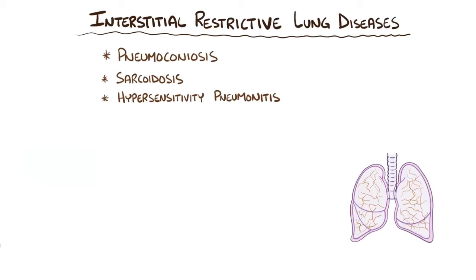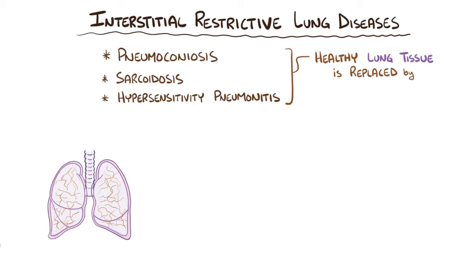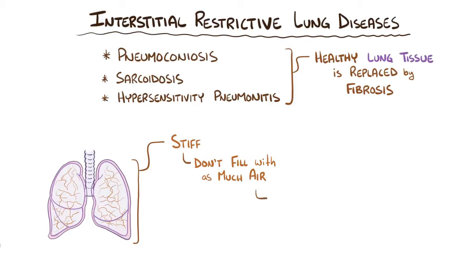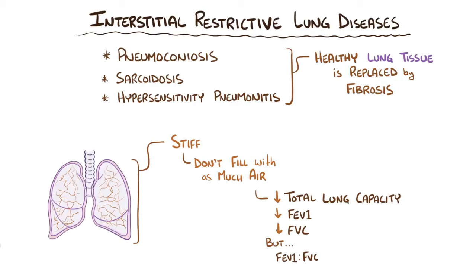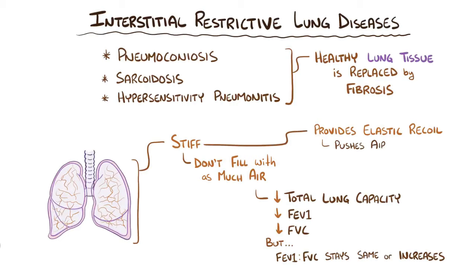With all types of interstitial restrictive lung disease, healthy lung tissue starts getting replaced by collagen fibers, a process called fibrosis. Fibrotic lungs are stiff and firm and can't stretch and expand properly, making it hard for them to fill with as much air. That causes the total lung capacity, forced expiratory volume in one second, and forced vital capacity to all decrease. Interestingly, the FEV1 to FVC ratio actually stays about the same or increases, because the FVC is reduced more than the FEV1 — the fibrotic lung provides elastic recoil and allows air to be pushed out faster during the first second of expiration.